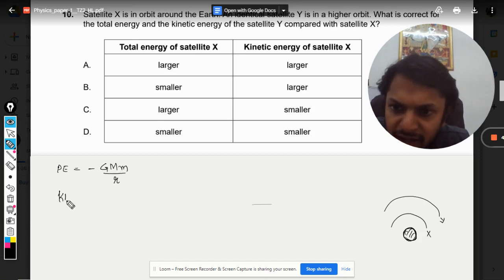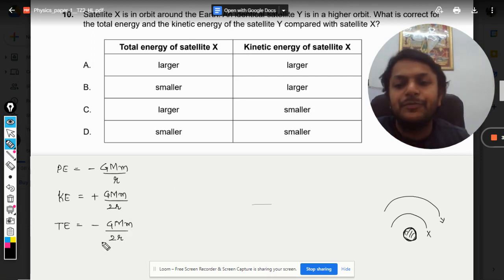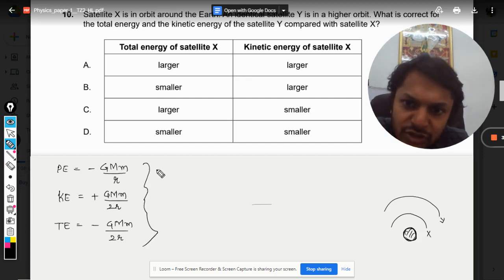Kinetic energy will be given by the positive of half of the potential energy, and the total energy, which is the sum of the two, it will come out to be negative. So it is coming out to be minus GMm/2r. This condition is known as bound state.